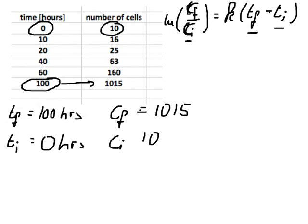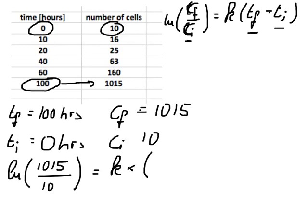All we need to do now is plug in our numbers. So we have ln, the final count that would be 1015 divided by the initial cell count that is 10, equals k times t final that was 100 hours minus zero hours.